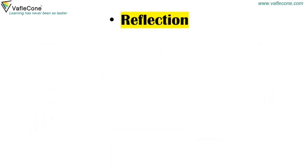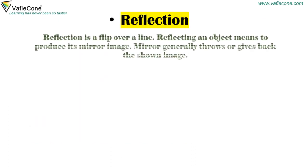Reflection. Reflection is a flip over a line. Reflecting an object means to produce its mirror image. A mirror generally throws back or gives back the shown image.